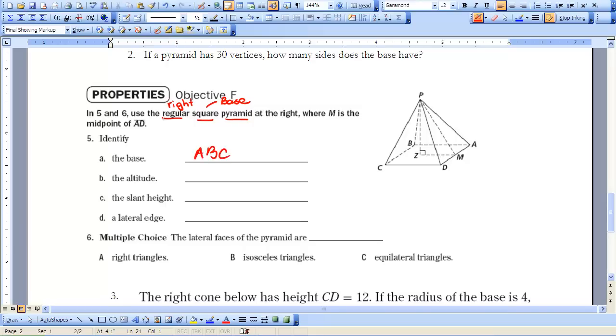The altitude is our segment that goes from the apex to the base, perpendicular, so the altitude would be segment PZ.